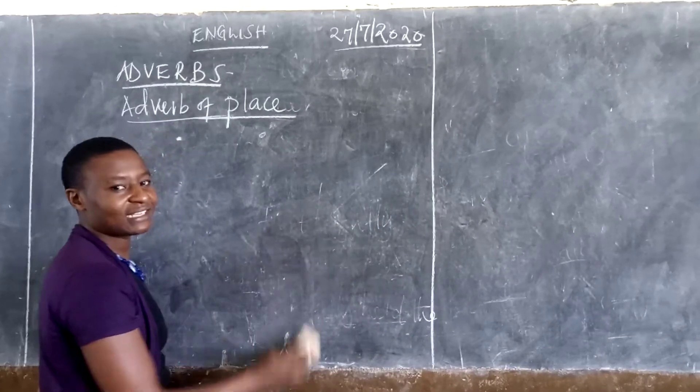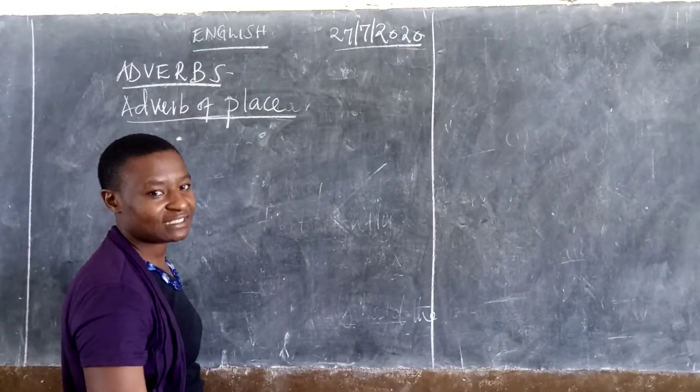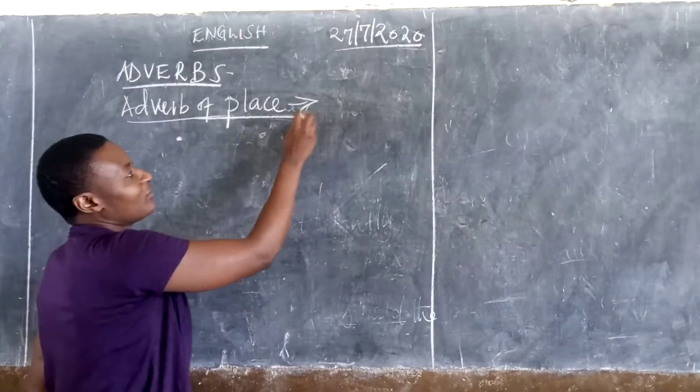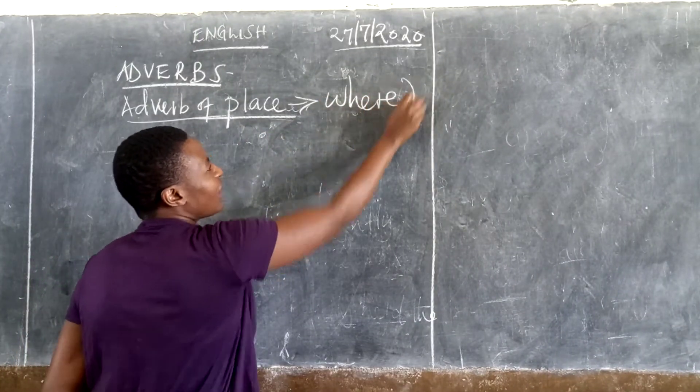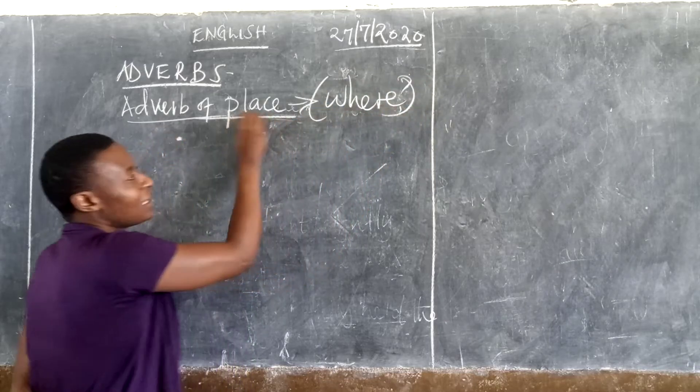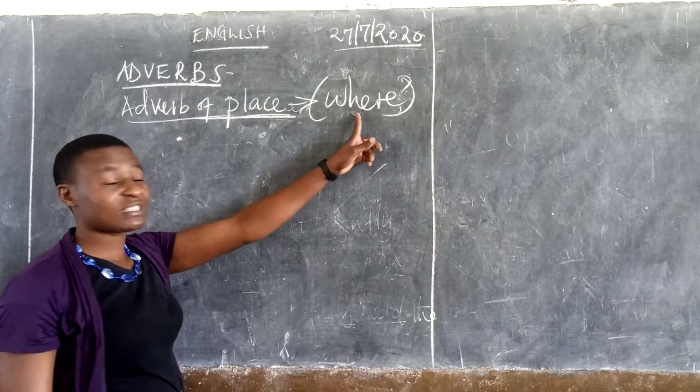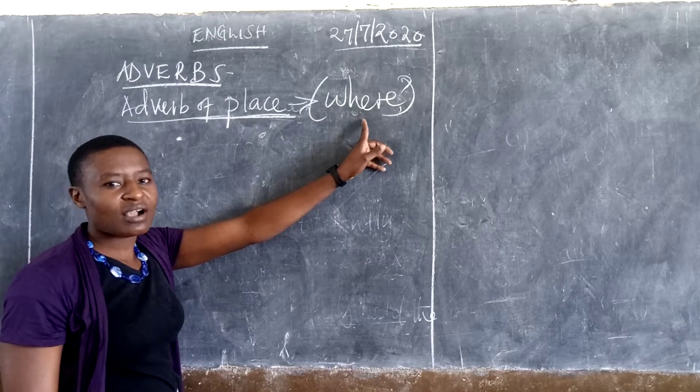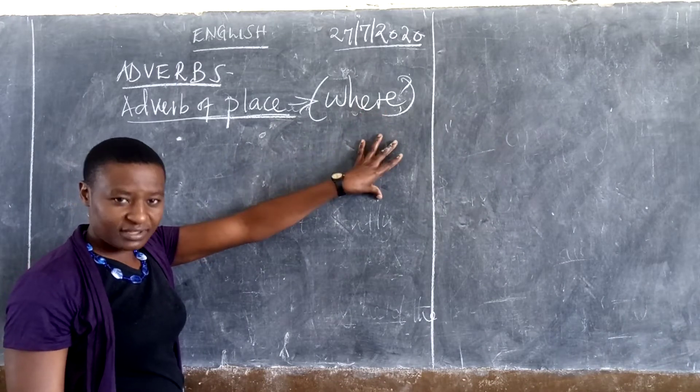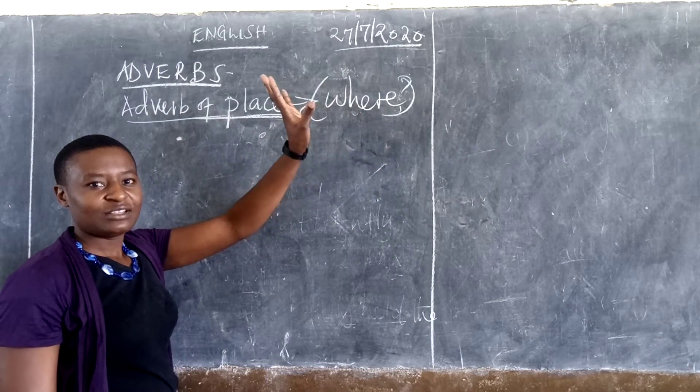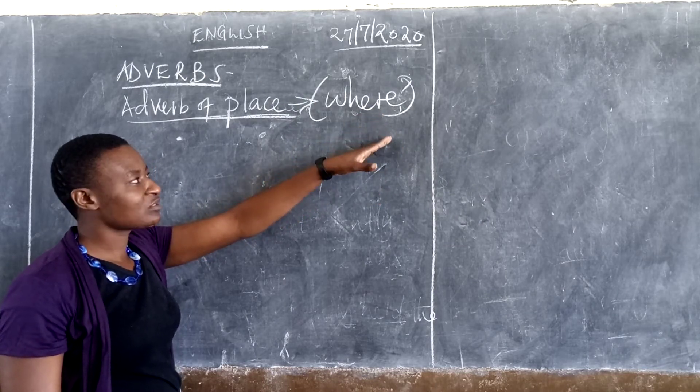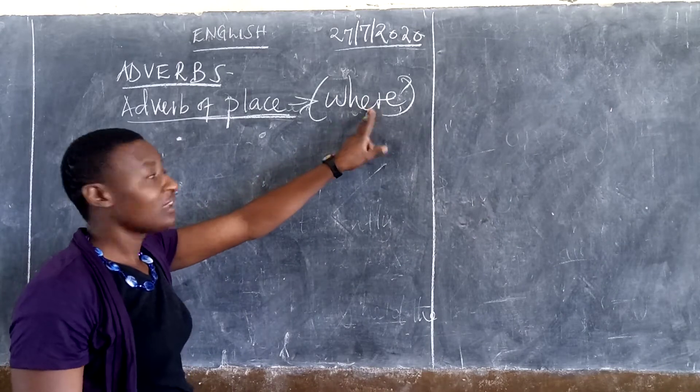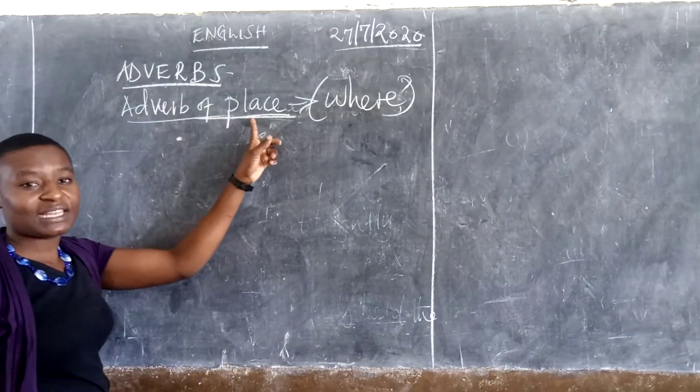Today, I want us to look at adverbs of place. This kind of adverbs, they answer the question, where? As long as we are talking about place, we are going to answer the question, where? Where do you come from? Where are you going? Where do you work from? Such kind of questions. As long as we are answering the question where, we are giving the adverb of place.